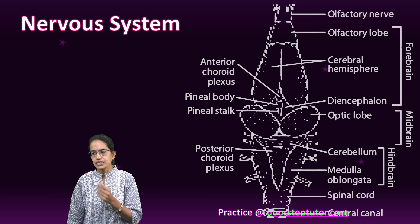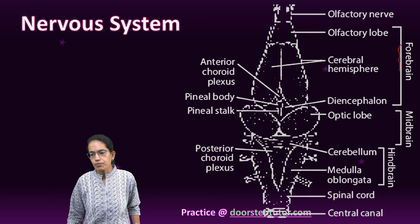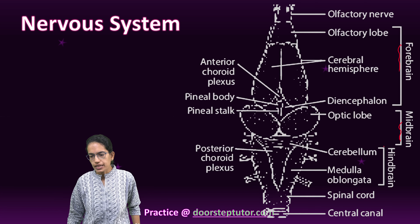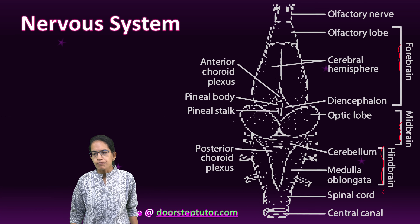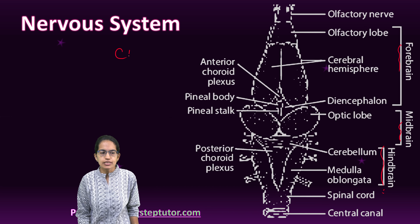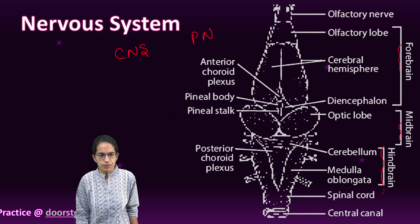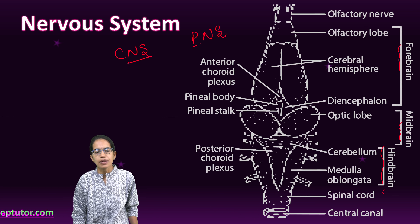Coming on to the overview of the nervous system. This is the structure of the brain. The brain encompasses the forebrain, midbrain, and the hindbrain.